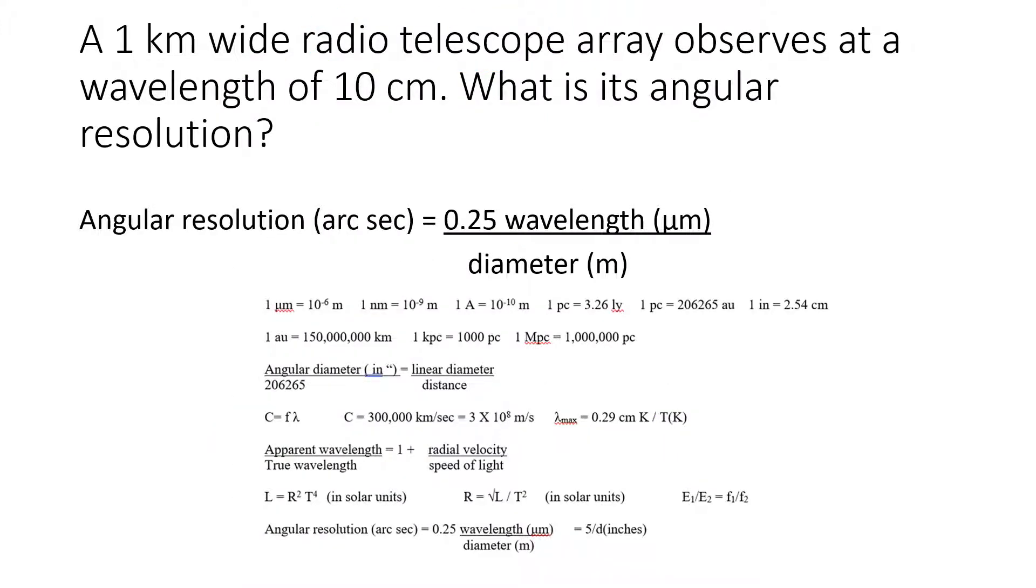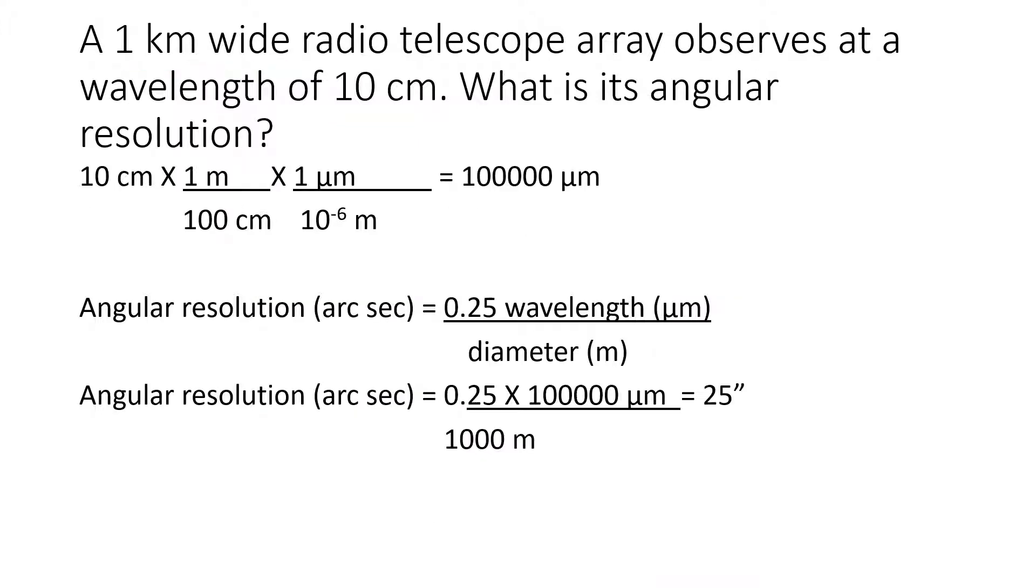So here's the formula again. We have the aperture and we have the wavelength. The aperture or diameter, we're going to convert that to meters. So this is going to be 1,000 meters over here. And in the top, the wavelength is going to have to be converted from centimeters into micrometers. Here is the relationship between micrometers and meters. And remember that there are a hundred centimeters in a meter. So let's convert. We have 10 centimeters times 1 meter is 100 centimeters. And 1 micrometer is 10 to the minus 6 meters.